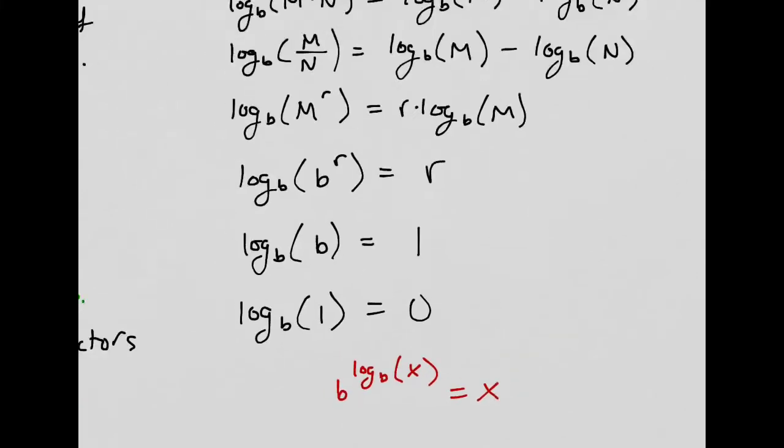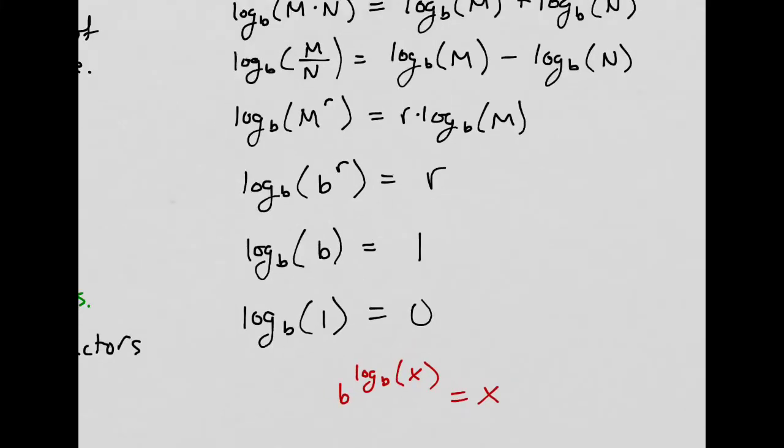If you plug in the same base, that's actually the same as this, because it's like B to the one. B to the one. So then you just get one. And then if you plug in one, you get zero. So like B to the zero equals one. Remember anything to the zero is one.